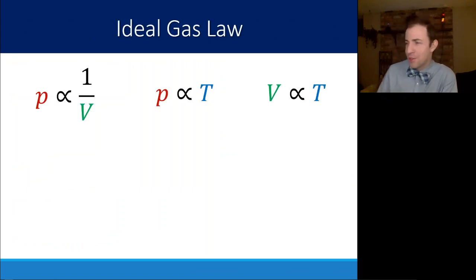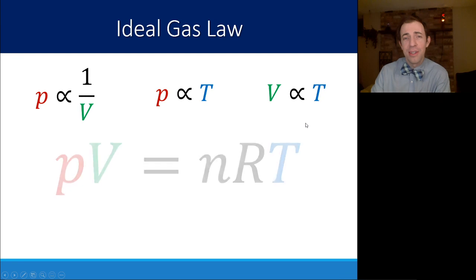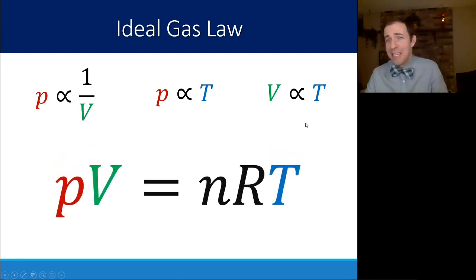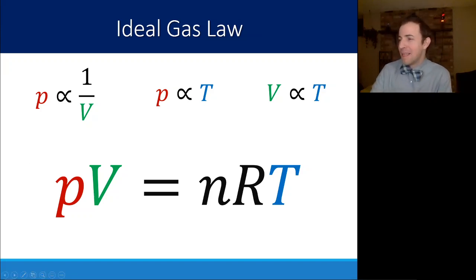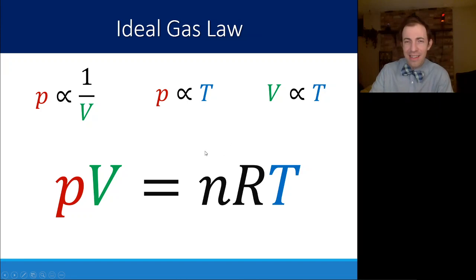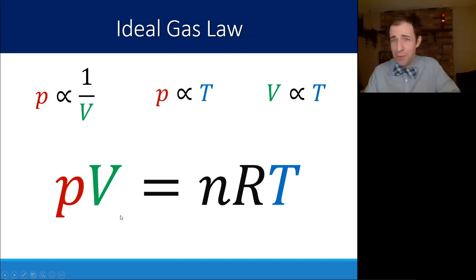Looking at these three relationships: pressure is inversely related to volume, pressure is directly related to temperature, and volume is directly related to temperature. These combine into the ideal gas law — something you probably remember from chemistry. If N, R, and T are held constant, increasing the pressure means a decrease in volume. And since pressure and volume are both opposite in direction to temperature changes, volume and temperature must be directly related: if one goes up, the other goes up as well.